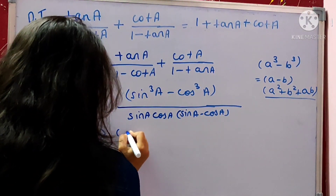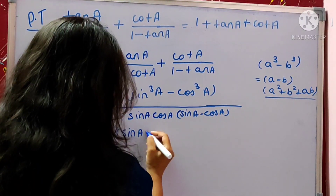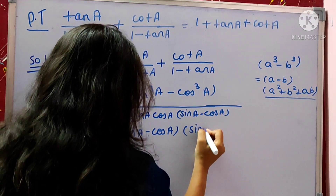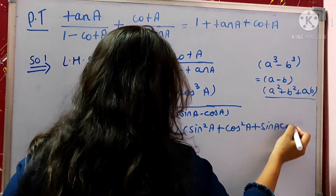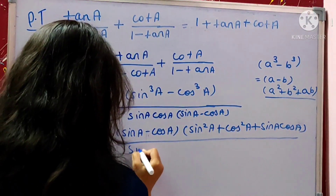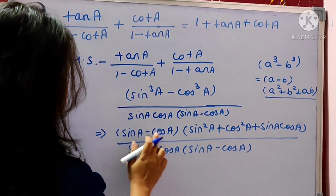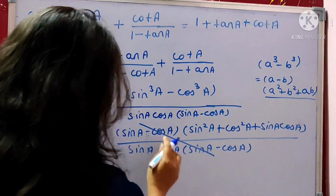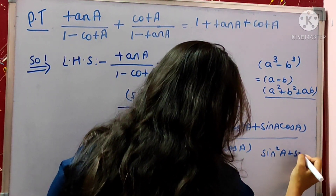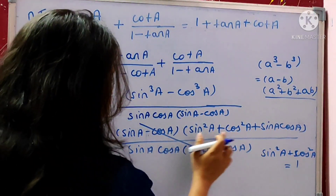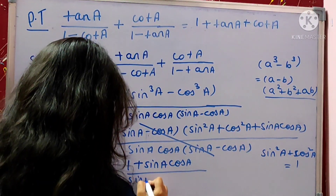As you can see, (sin A minus cos A) in the numerator and denominator cancel out. Then sin squared A plus cos squared A gives the value 1 by using the Pythagorean identity. Putting the value 1, we get: (1 plus sin A cos A) divided by sin A cos A.